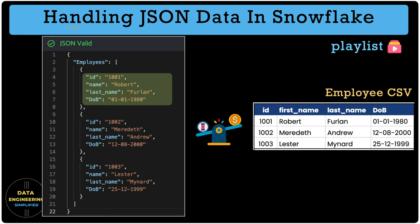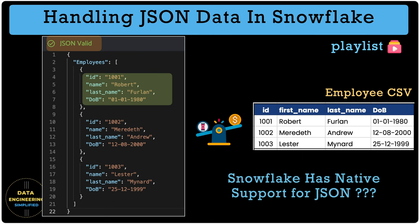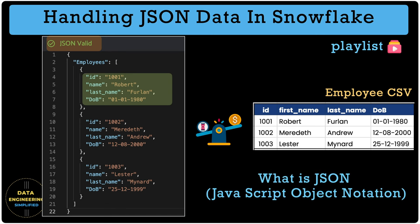We never talk about valid CSV files, but we talk about valid JSON. What does valid JSON mean? When we say Snowflake has native support for JSON and rich support for JSON processing, what does it mean, and how is this different from handling simple string processing or string parsing? Application or API developers treat JSON files in a very different way, and as data engineers we must know and educate what JSON is and why such files are called object notation rather than just a simple data file — and everything about JSON processing in Snowflake.